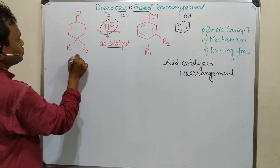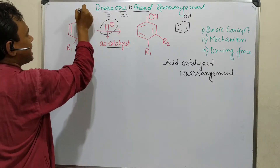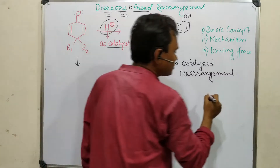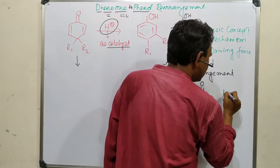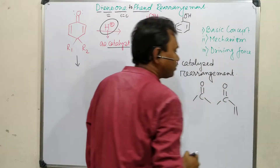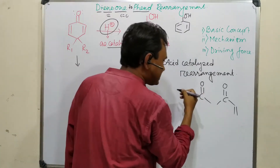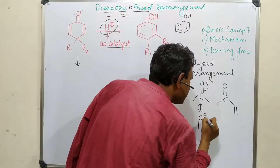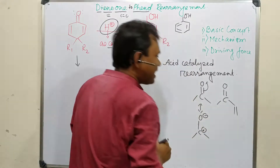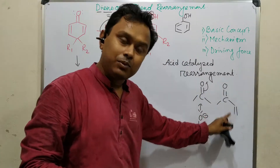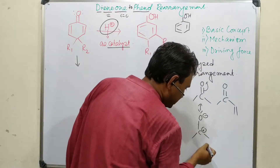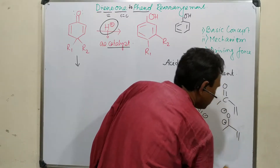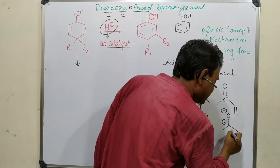So how does this reaction happen? Let's go to the mechanism. First, it will be protonated in the presence of acid — this lone pair will be protonated. Now as background: if you consider a simple carbonyl versus a carbonyl attached with a double bond, what is the difference? We know carbonyl has resonance — this will give O⁻ and C⁺. If it is attached to a double bond, that double bond can participate in resonance.